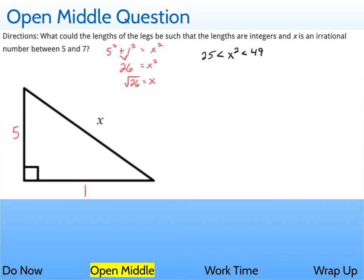There's tons of other options you could choose for this. Just anything where the two legs squared would add up to something between 25 and 49.